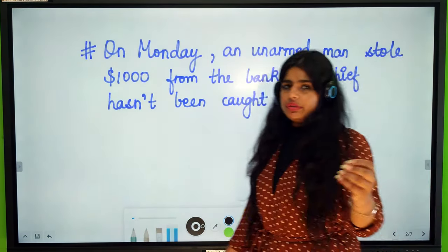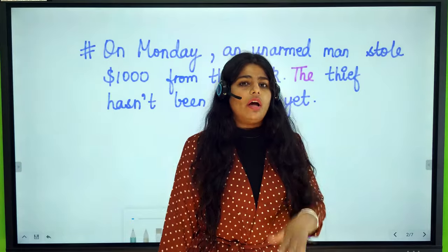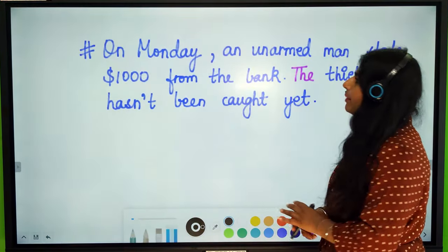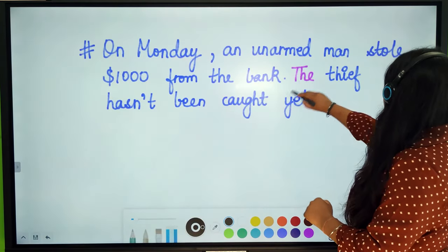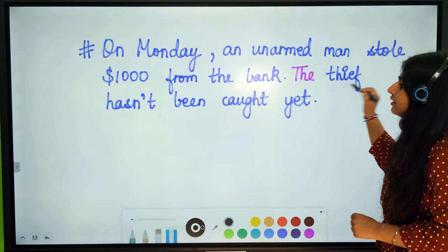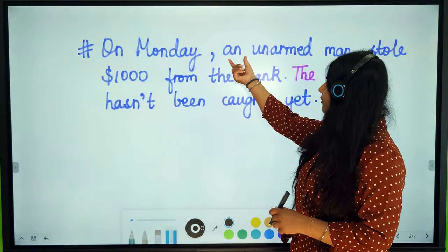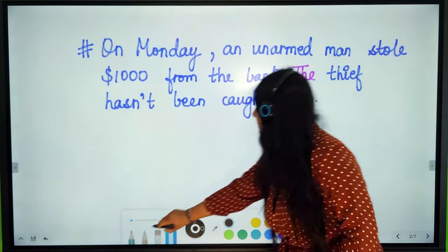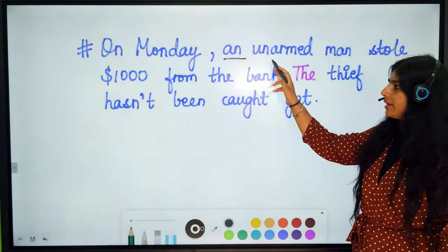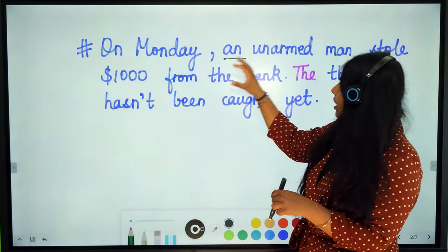I'm going to give you certain rules to help you use 'the' correctly, with the help of examples. The first example is: 'On Monday, an unarmed man stole one thousand dollars from the bank. The thief has not been caught yet.' You must have noticed the use of 'an' before 'unarmed' — that's because it starts with a vowel sound.